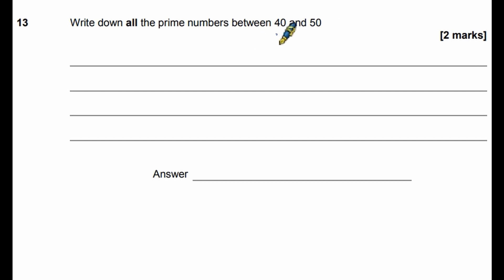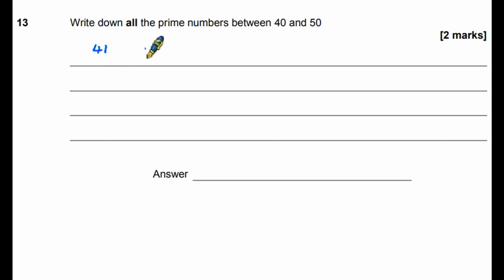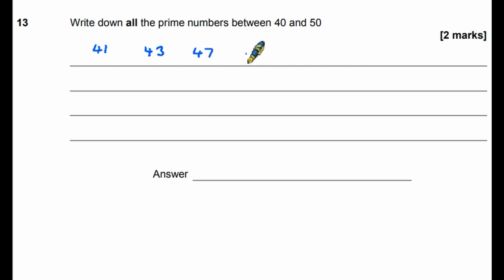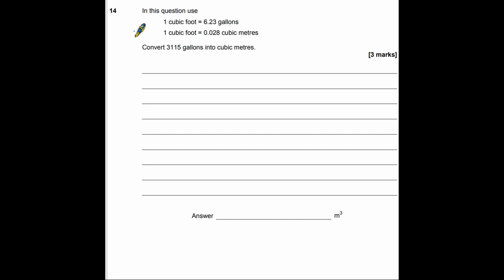Question 13: write down all the prime numbers between 40 and 50. A prime number only divides by itself and 1 — so even numbers are out. Testing odd numbers: 41 is prime; 43 is prime; 45 divides by 5 or 9 so not prime; 47 is prime; 49 divides by 7 so not prime. The answer is 41, 43, and 47.